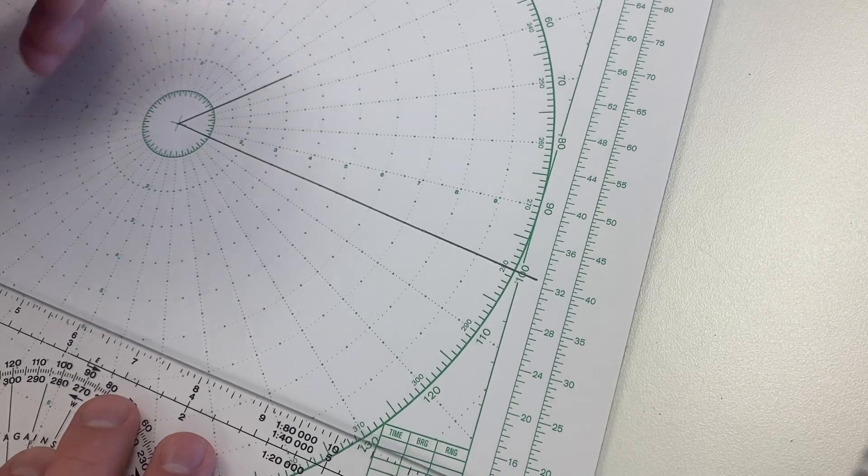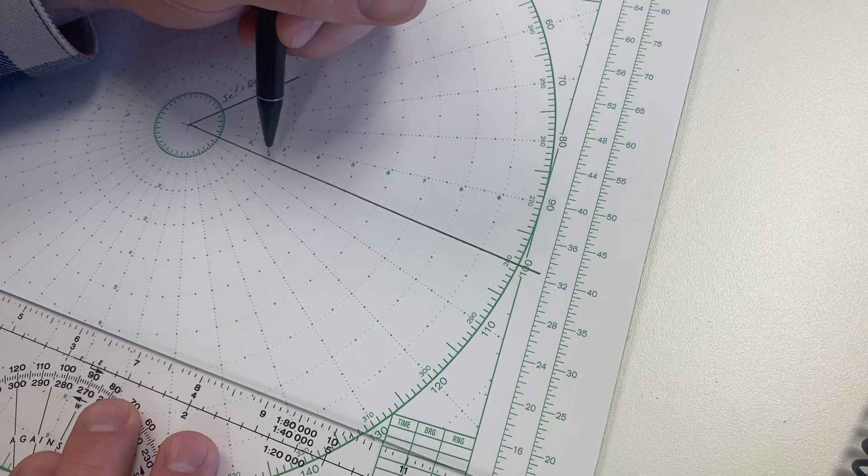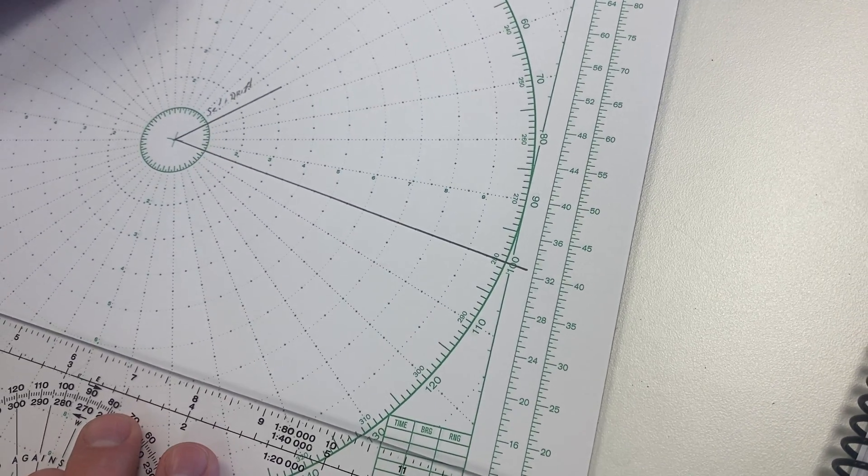So we have our set and drift line. Set and drift. This is the course we want to make good. Now we still have that six knots.